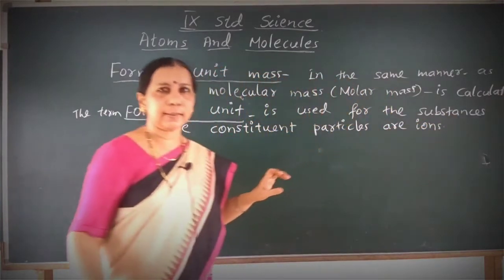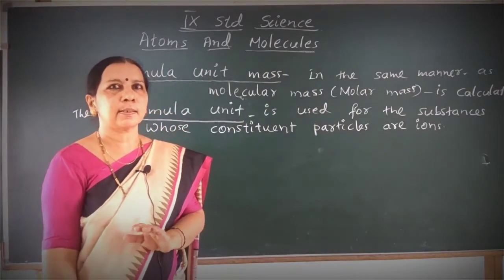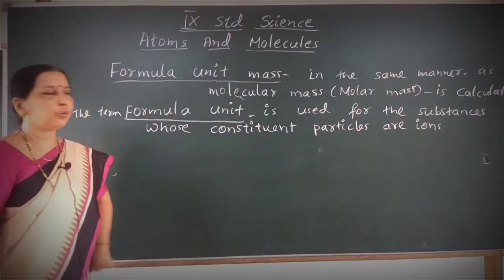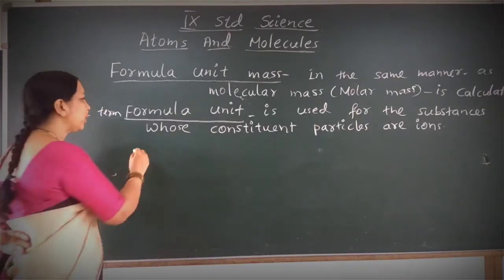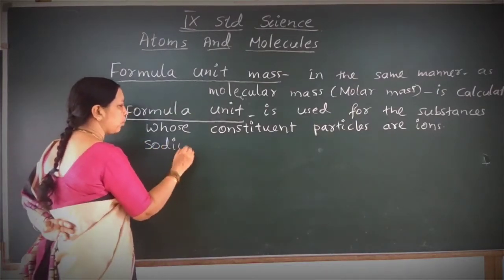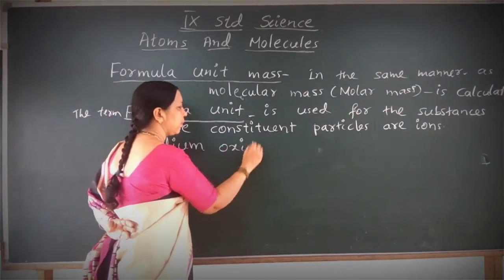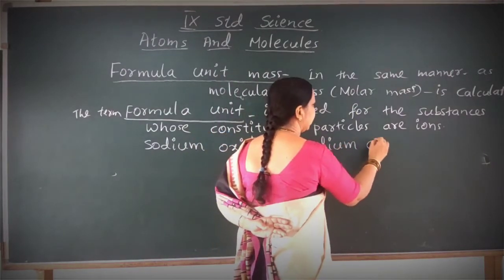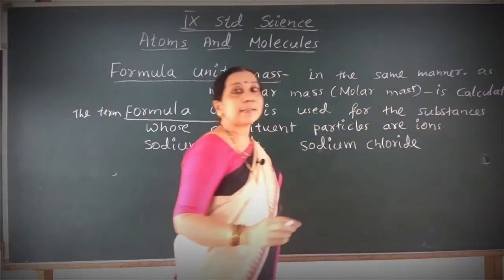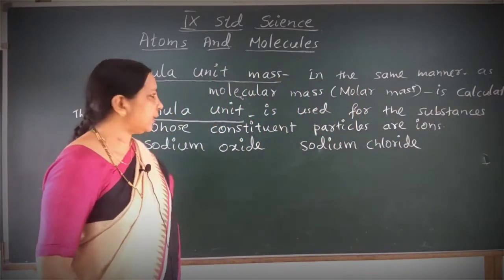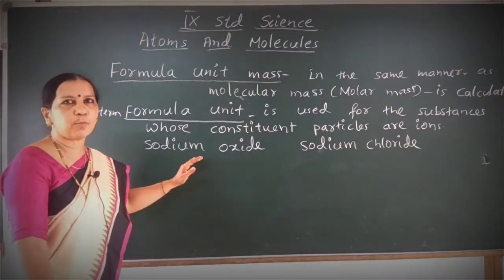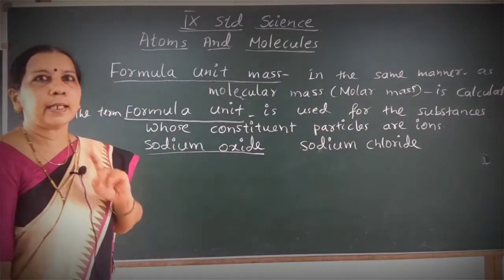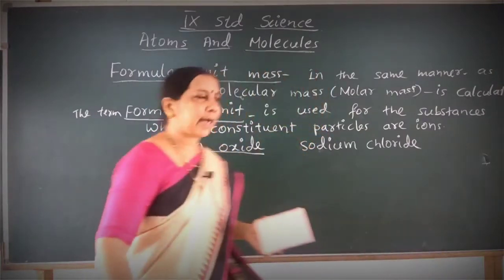As I said, if a substance contains particles in the form of ions, then we use the term formula unit. For example, let us consider sodium oxide, sodium chloride, or potassium sulfate. These compounds contain particles in the form of ions. Let us consider sodium oxide and find its formula unit mass.